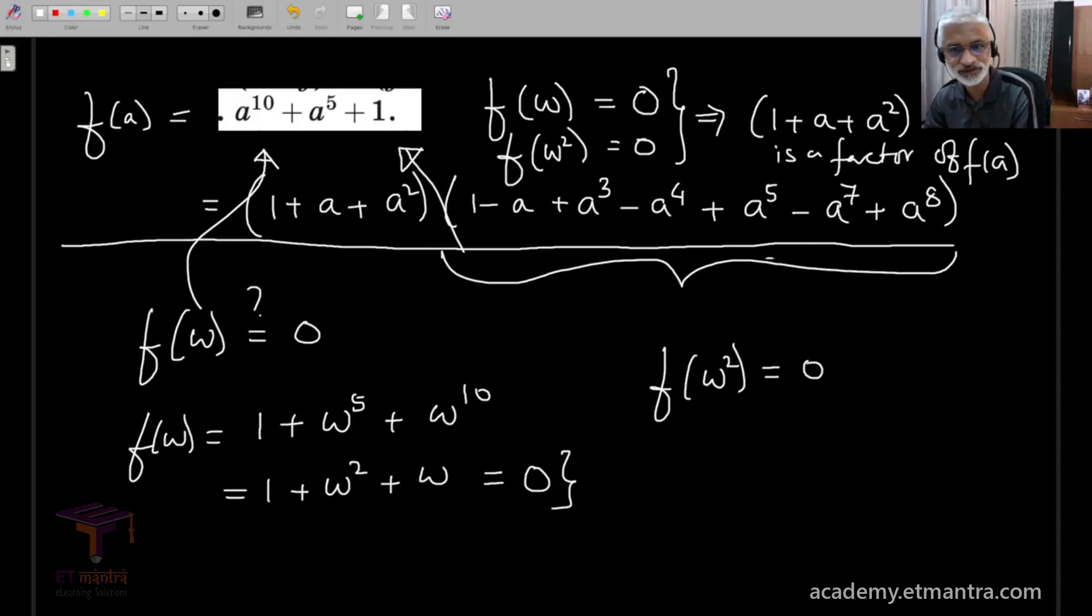And similarly, one can easily prove that f omega square is equal to 0. Let me just do it. 1 plus omega raised to 10 plus omega raised to 20. And this is nothing but 1 plus omega plus omega square. And that is again equal to 0. So, this is the explanation for the factorization of this polynomial.